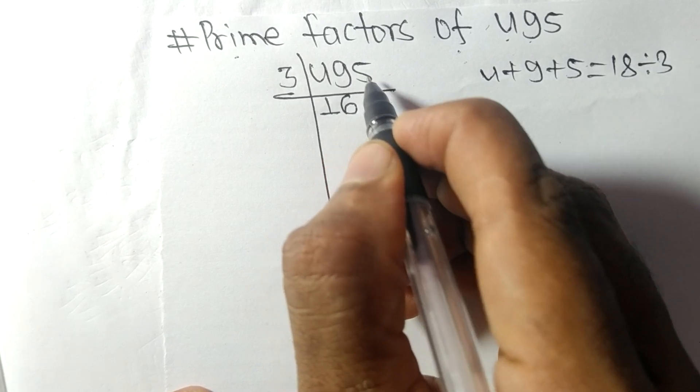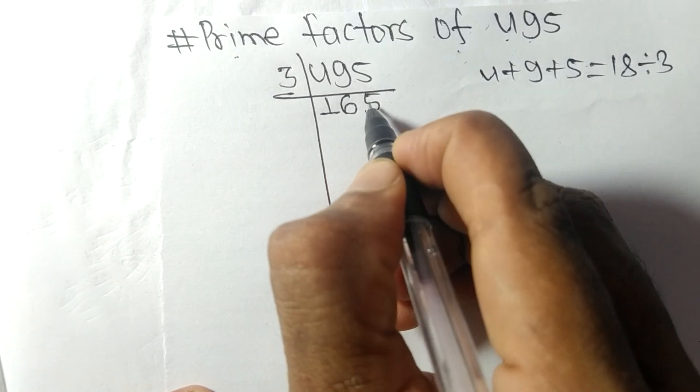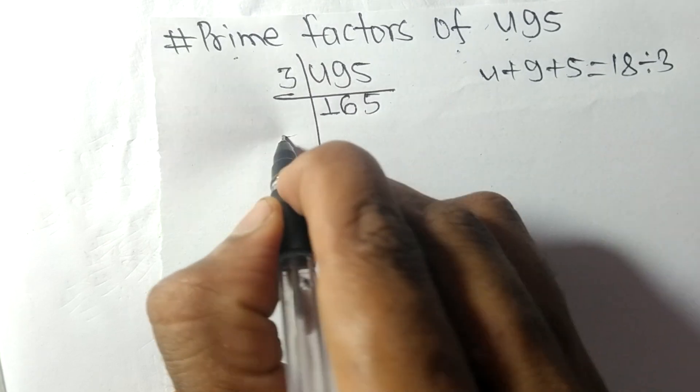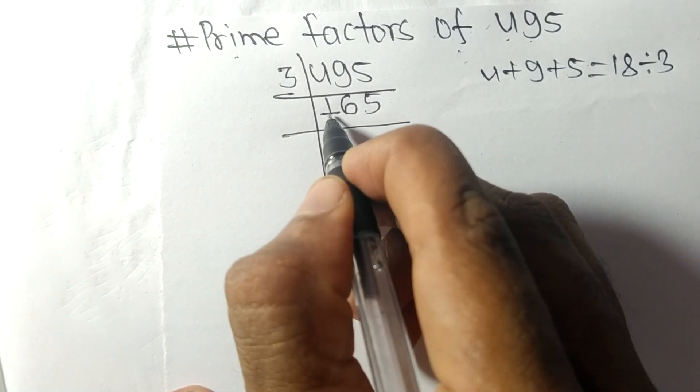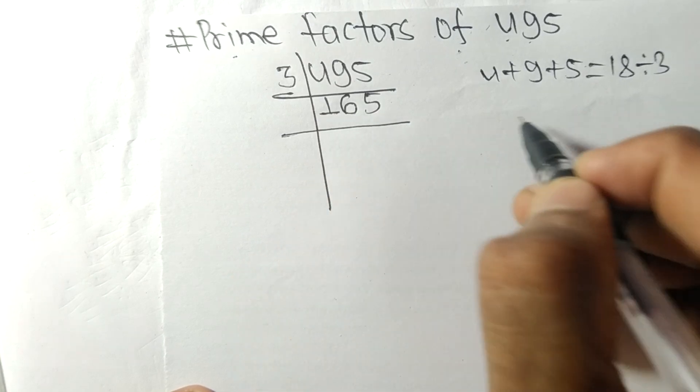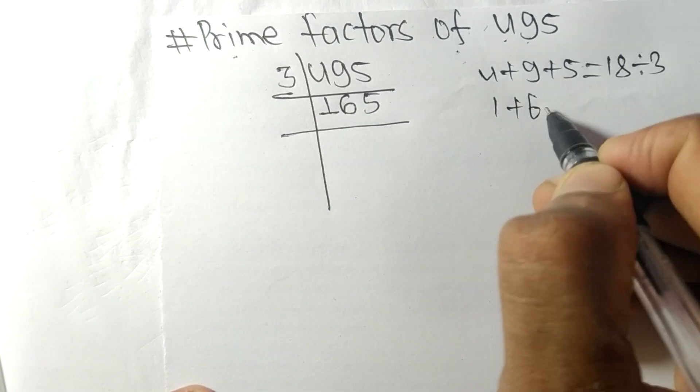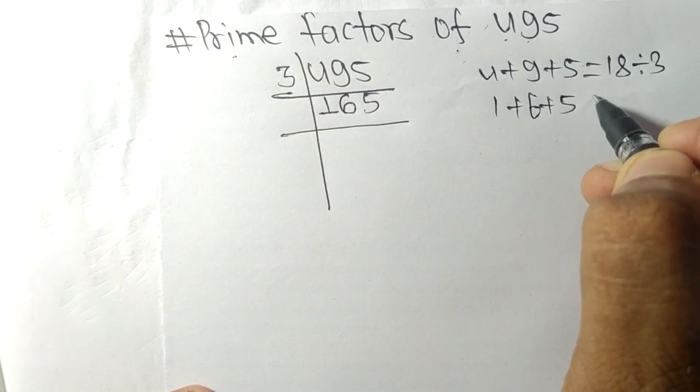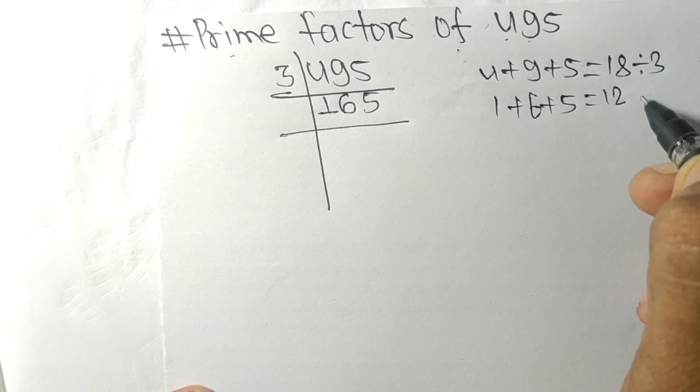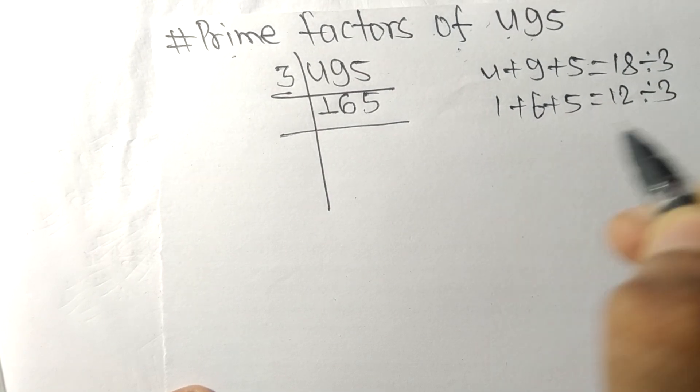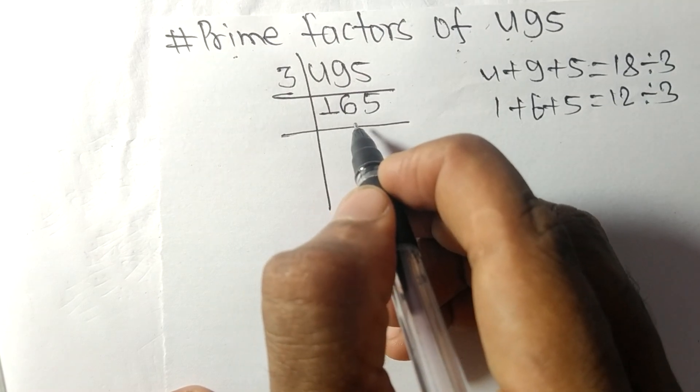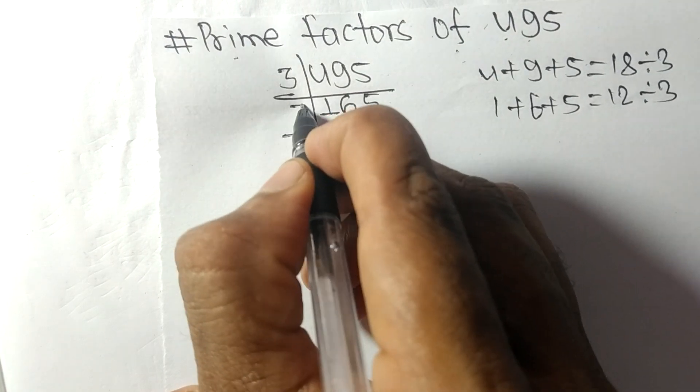1, 5, 15. So 3 times 5 equals 15. Now we got 165. Again we add all these numbers, 1 plus 6 plus 5, we get 12, and 12 is exactly divisible by 3, so 165 is also divisible by 3.